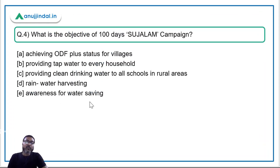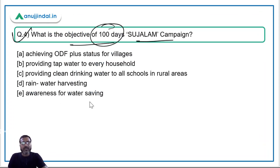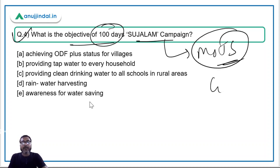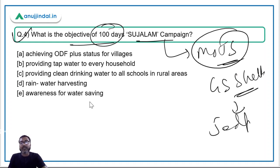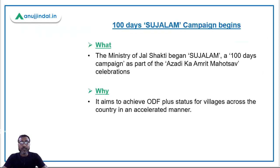Moving to question four: what is the objective of the 100-day Sujalam campaign? Remember, this campaign has been launched by the Ministry of Jal Shakti, which is headed by Mr. Gajendra Singh Shekhawat, whose Lok Sabha constituency is Jodhpur in Rajasthan.